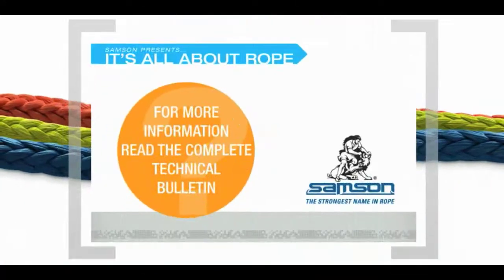When selecting a rope for any critical application, consult Samson's product line catalogs, brochures, and technical bulletins. You'll find full specifications and helpful information on specific applications for all Samson products. They're all available online at samsonrope.com. And if you need help determining the best product for your application, contact Samson's customer service department. They'll be happy to assist you.